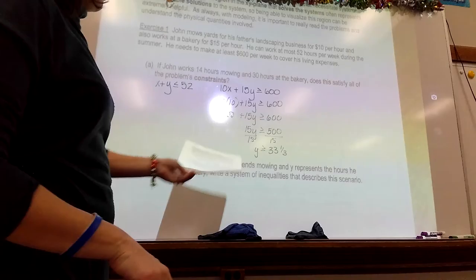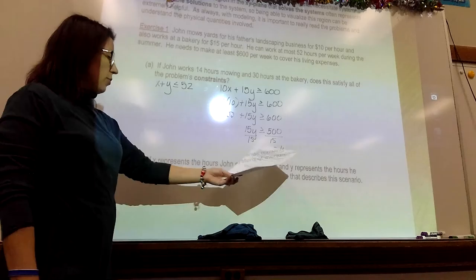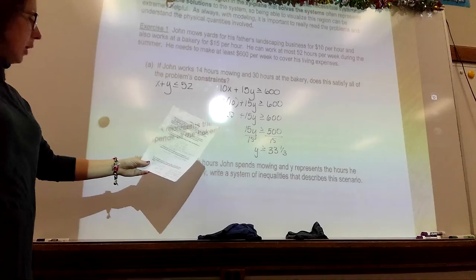I'm going to pause it, and then I will come back and show you. All right. So, I get Y is greater than or equal to 33 and a third. So, yes, he'll be able to work 33 and a third hours at the bakery, and that will give him $600.